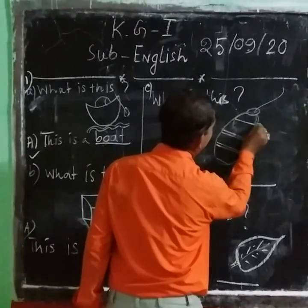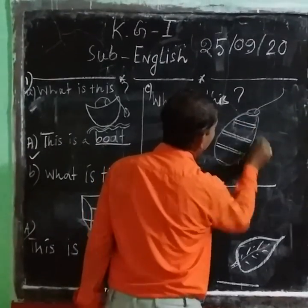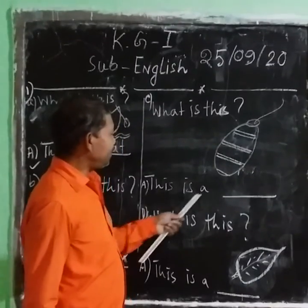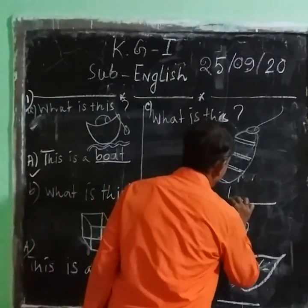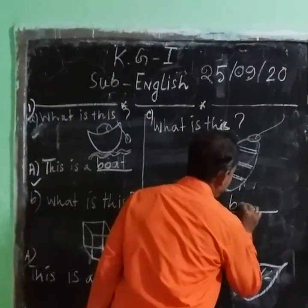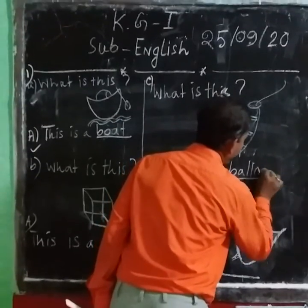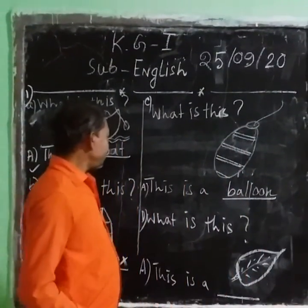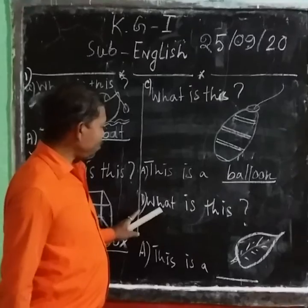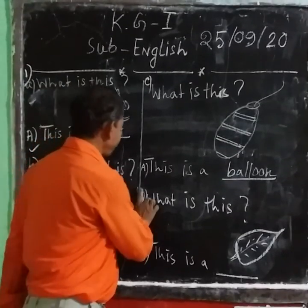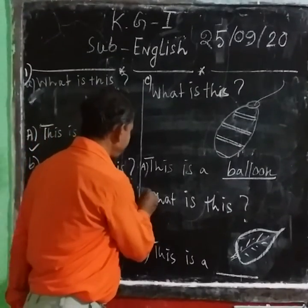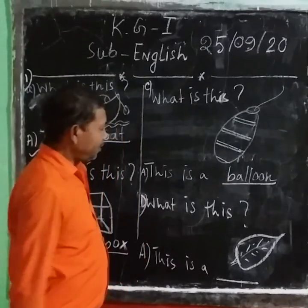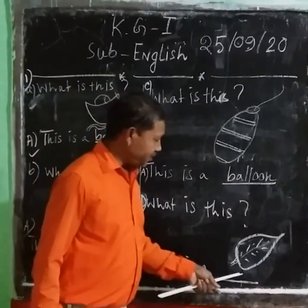This is a book. B-A-N. This is a book. You can have a script. What is this?